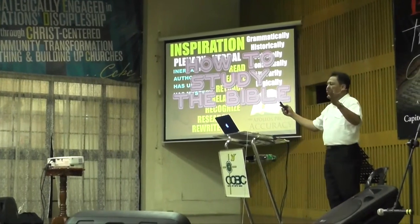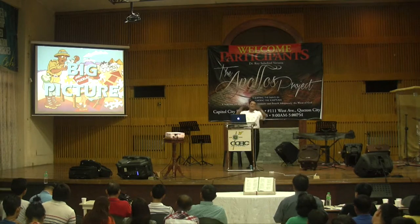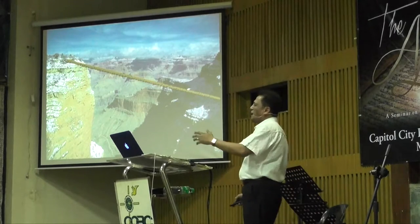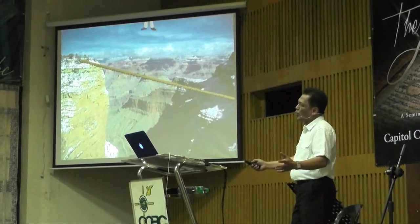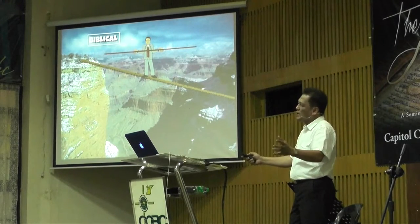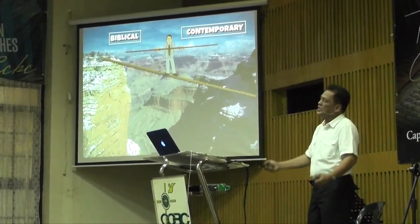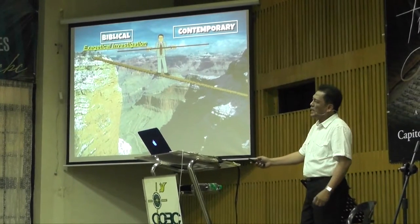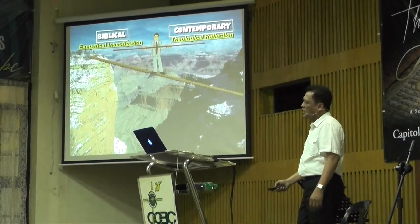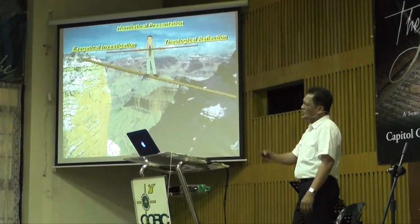Putting it all together — the big picture of how to do exegetical investigation. The Apollos project's biggest picture is that the pastor, preacher, or teacher is like a tightrope walker who needs a balancing pole. You need to balance two worlds: the biblical world — the world of the ancient text — and the contemporary world — the world of your audience. To understand it biblically, you need exegetical investigation, the seven R's. To understand your audience and the contemporary world, you need theological reflection.